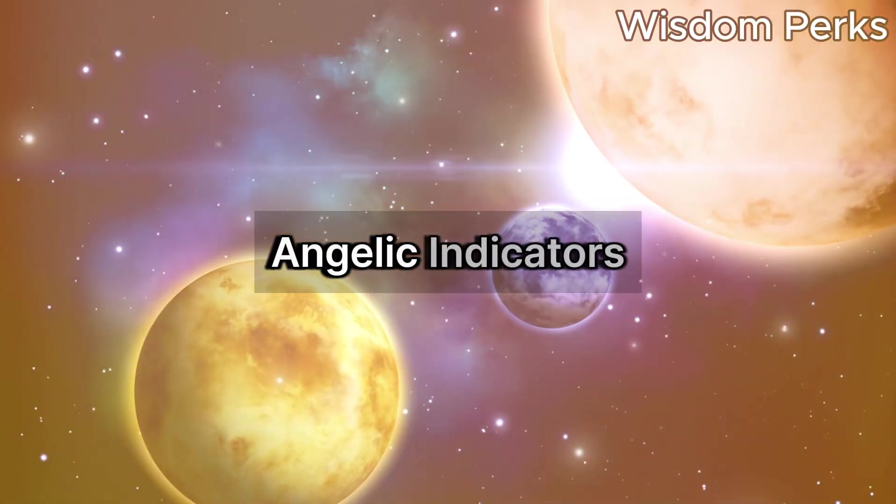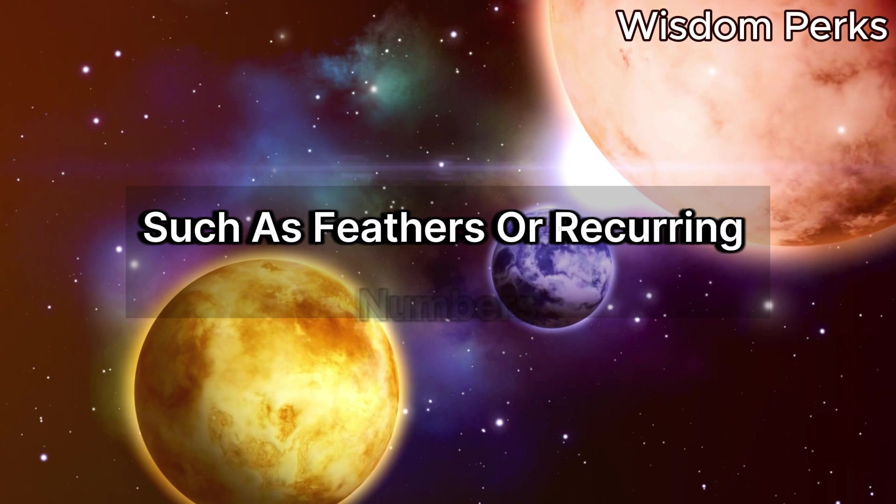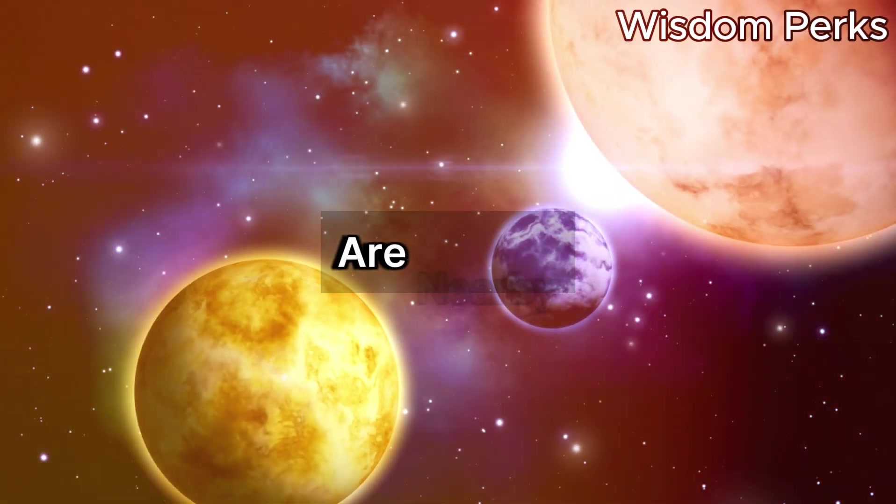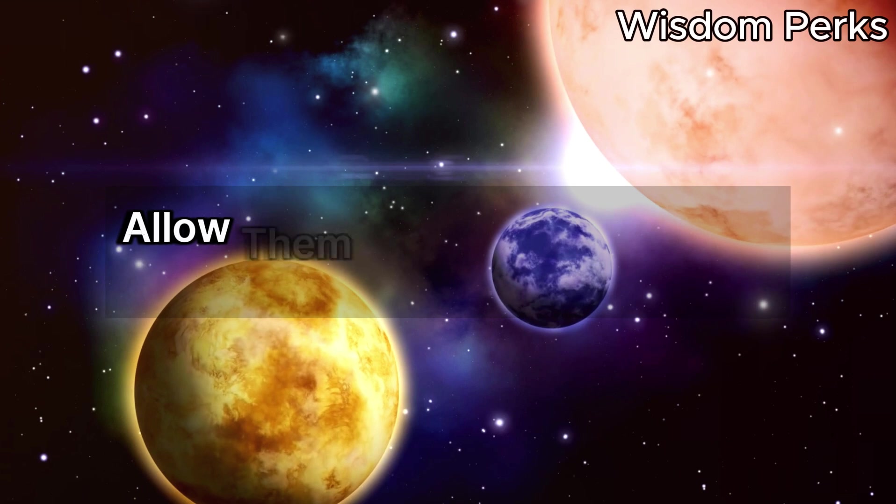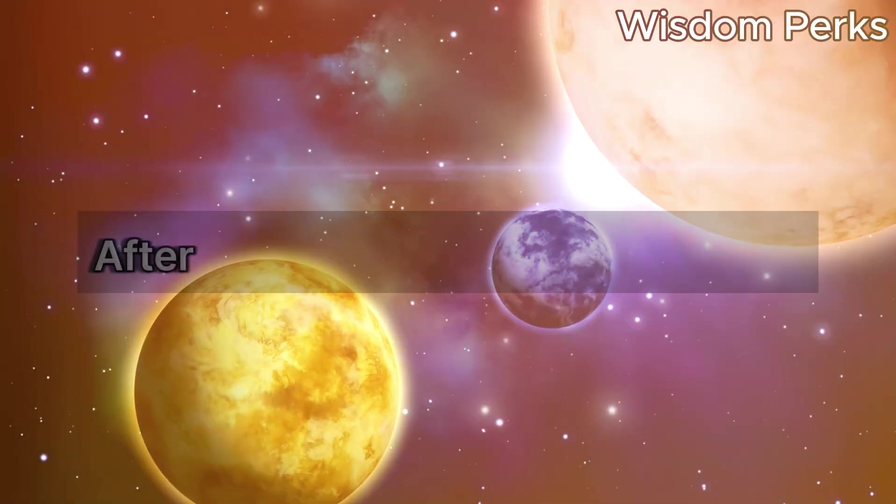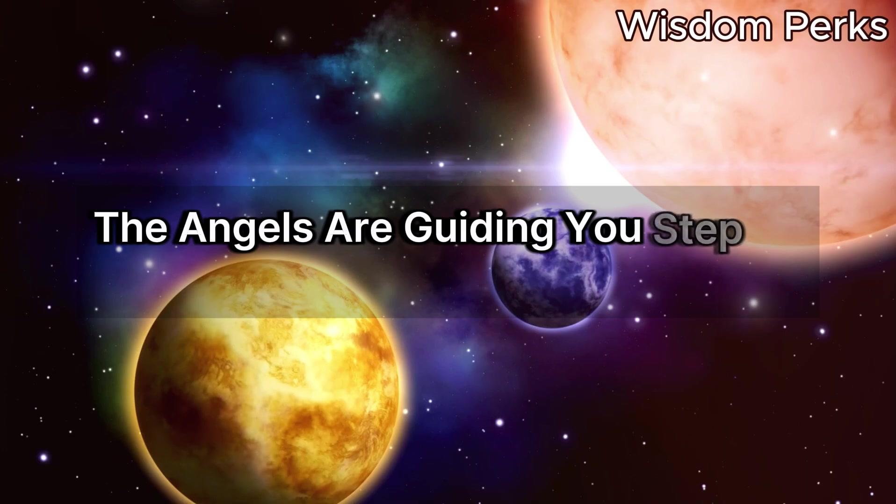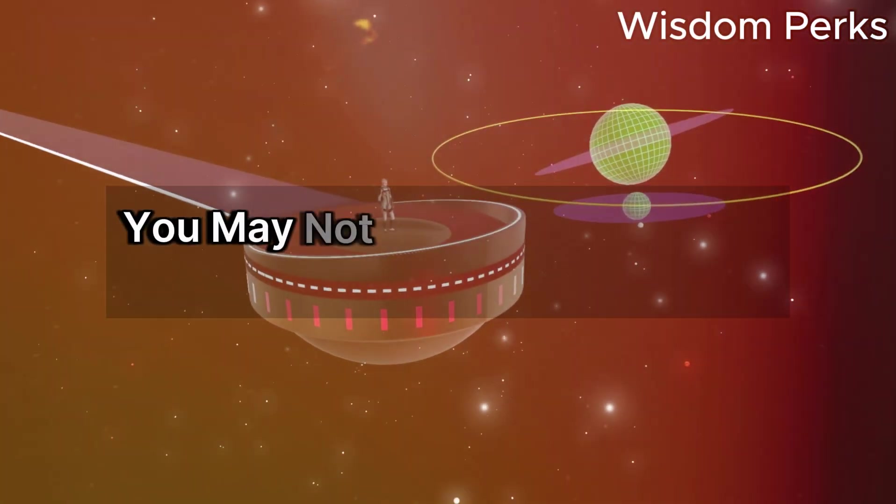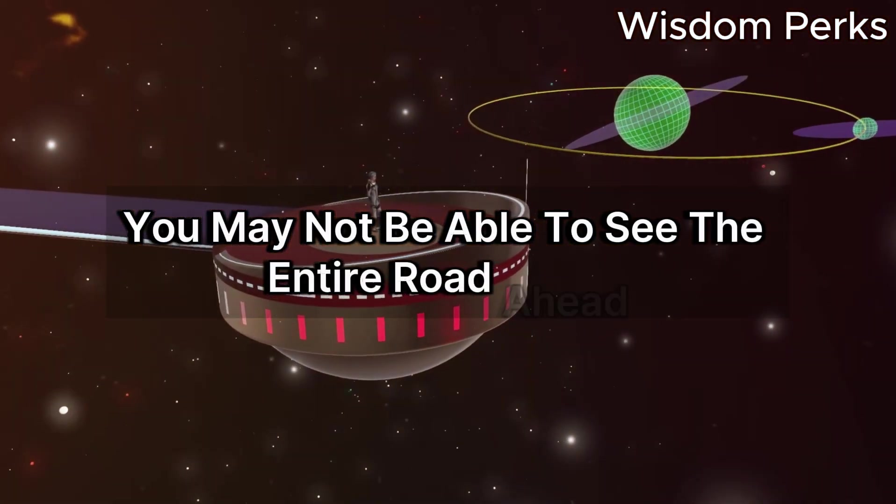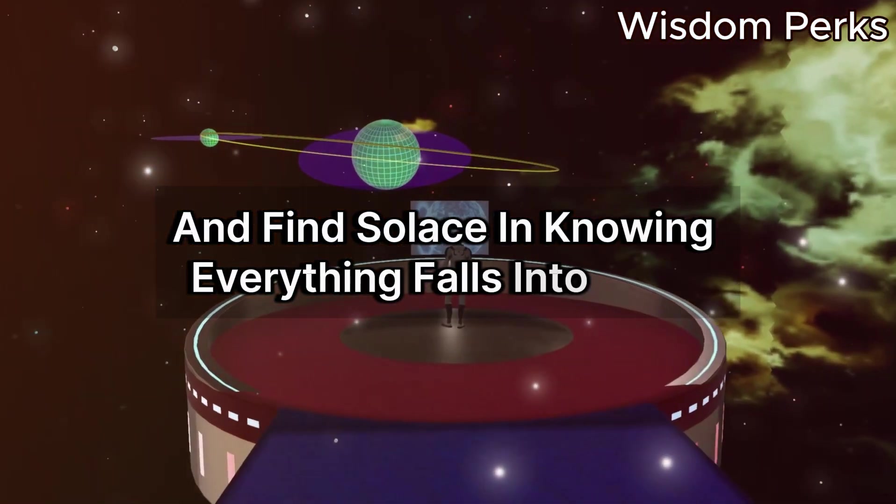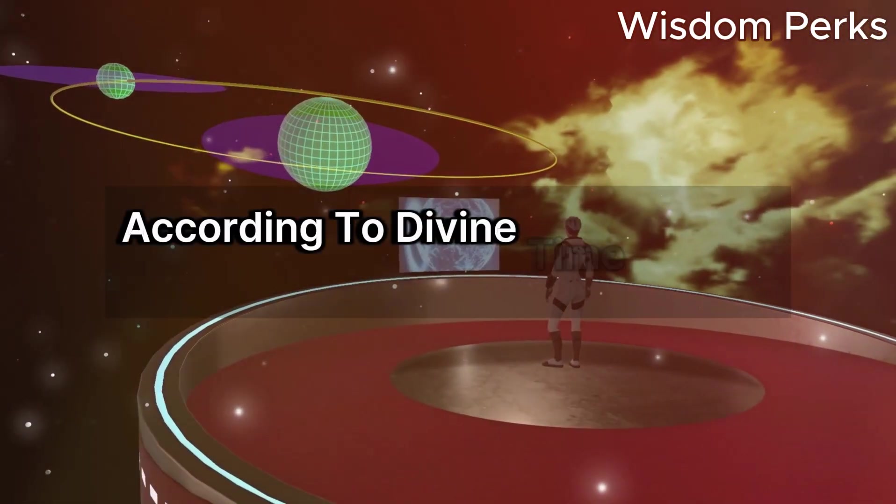Angelic indicators, such as feathers or recurring numbers, are reassuring reminders that your guardian angels are nearby. Allow them to gently guide you ahead after you open your heart to them. The angels are guiding you step by step, even though you may not be able to see the entire road ahead at the moment. Believe and find solace in knowing everything falls into place according to divine time.